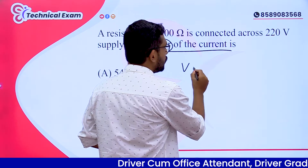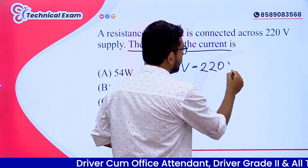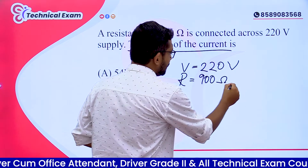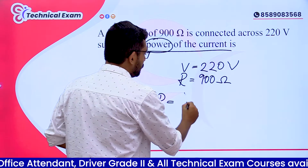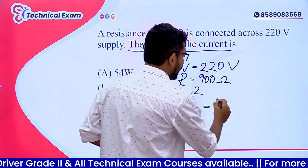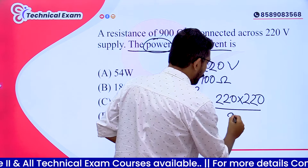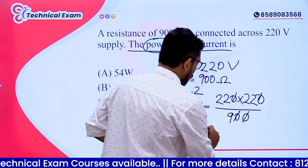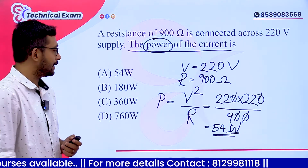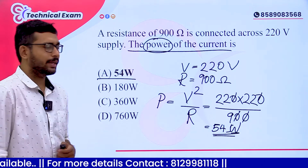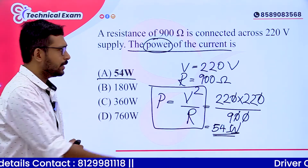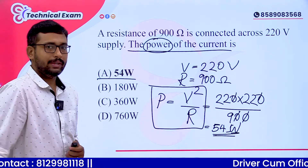The voltage is 220 volts connected across 900 ohm resistance. Power equals V squared divided by R. Substituting: 220 × 220 divided by 900 gives 54 watt. So Option A, 54 watt, is correct. You can learn this equation — Power = V²/R — and directly substitute to answer.